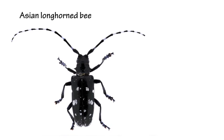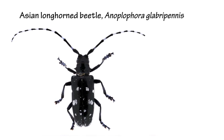First, how to identify it: it is a rather large insect, about three centimeters in length, and overall is blackish with multiple white spots of varying sizes on the elytra — the hardened wing coverings over the abdomen.